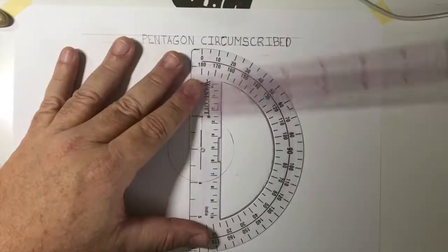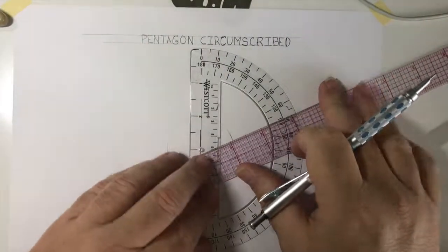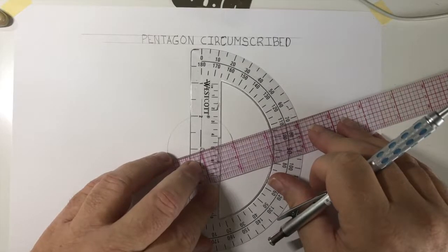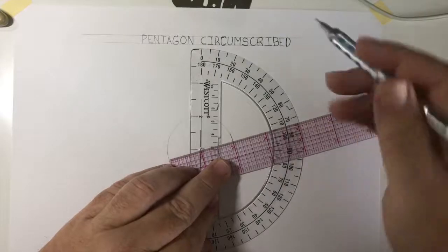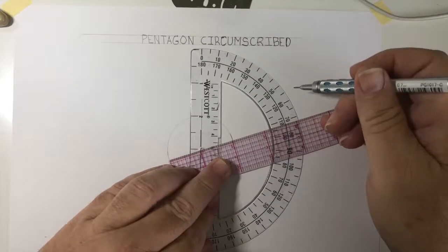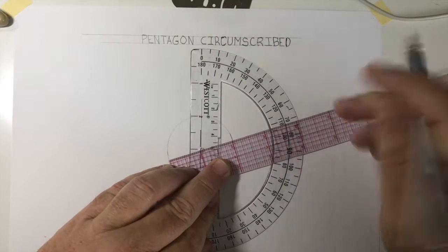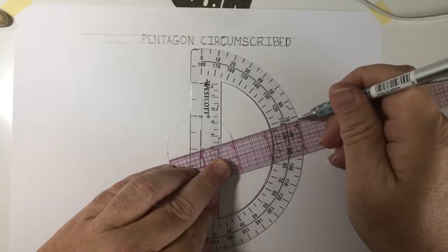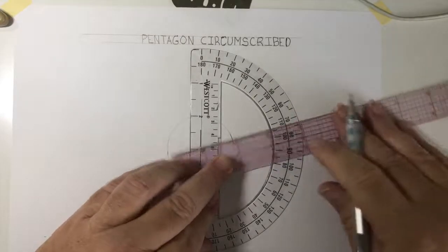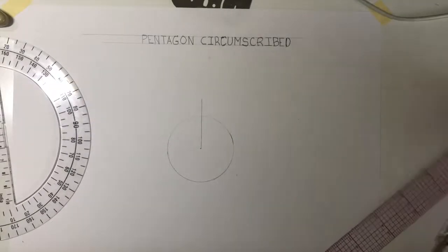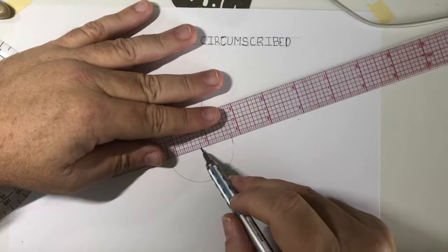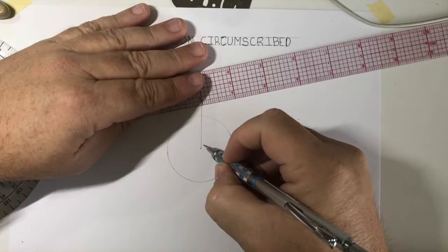I'm going to find 72 degrees. So you might want to use another straight edge to kind of find a really good spot. But anyway, so there's my dot.